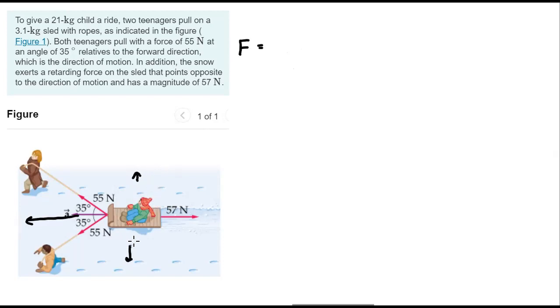So there's no movement in the y direction if we look at this as the coordinate system. The two teenagers are doing the exact same force, exact same angle. So all movement in the y direction cancels out completely. We can ignore sine in this case.